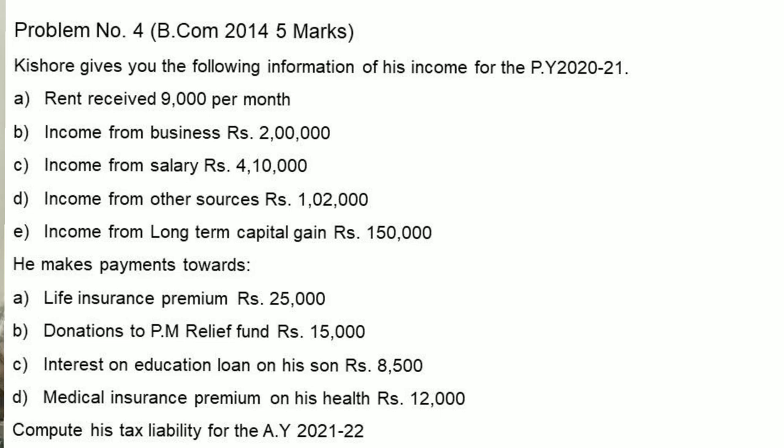This problem gives information of income for previous year 2020-21: rent received 9,000 per month, income from business, income from salary, income from other sources, income from long-term gain. He makes payments towards LIC premium, donation to PMRF, interest on education loan of his son, medical insurance premium on his health 12,000. Compute tax liability.